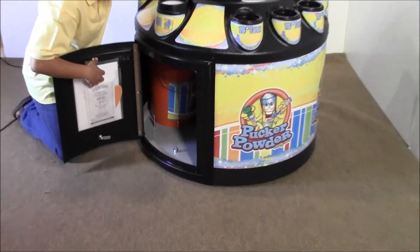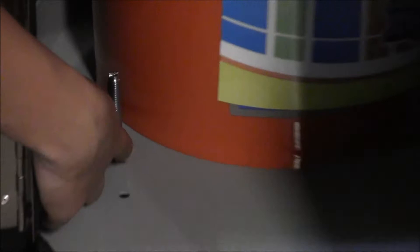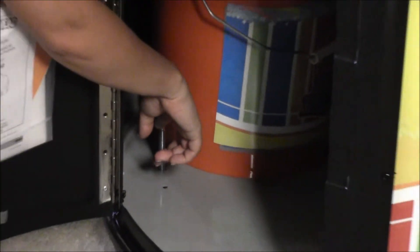Once inside the machine, locate all four of the leveling feet. Lower these leveling feet until they are secure, that way your machine will no longer move.